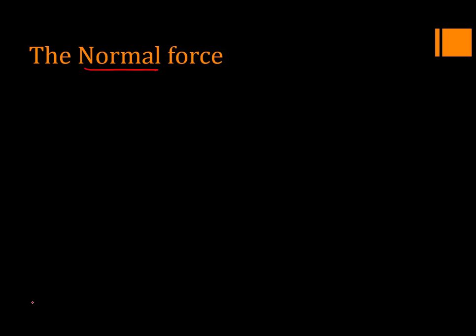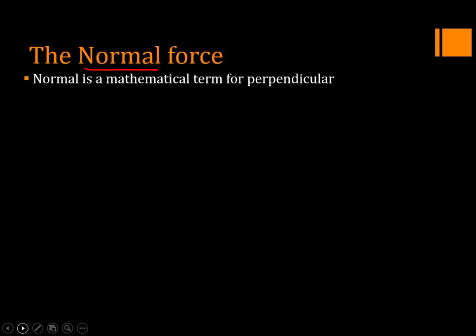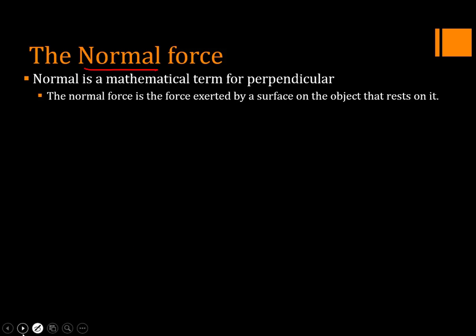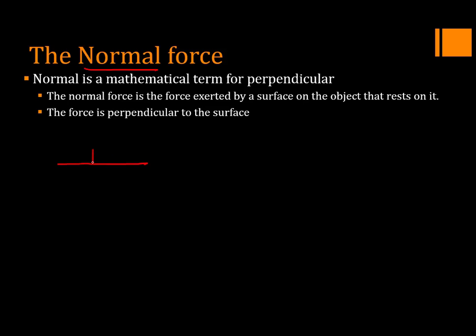The next thing we looked at is the normal force. Normal is a mathematical term meaning perpendicular, or at right angles. The normal force is the force a surface exerts on an object resting on it, and that force is perpendicular to the surface. When a book rests on a desk, there's a force pulling down — that's weight due to gravity — and a force pushing up, which is the normal force. It's at a right angle to the surface and pushes against weight, so those two forces balance and cancel out, adding up to zero.